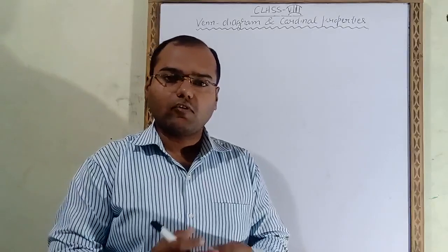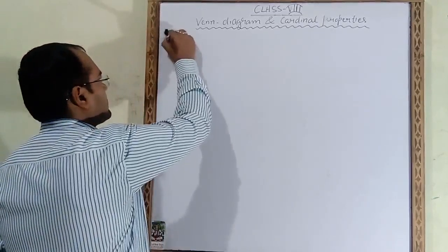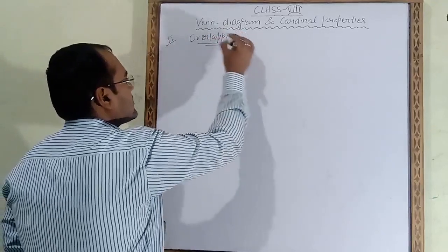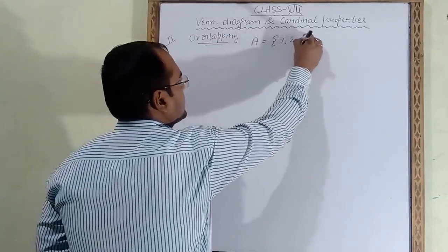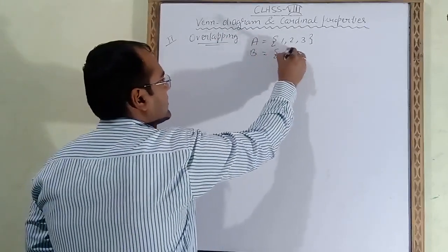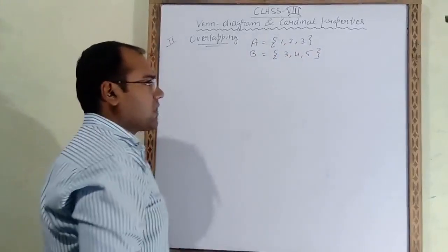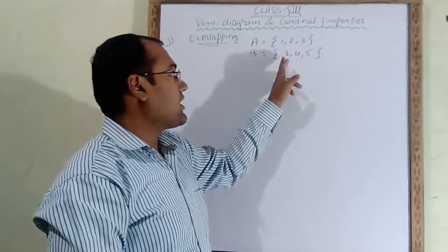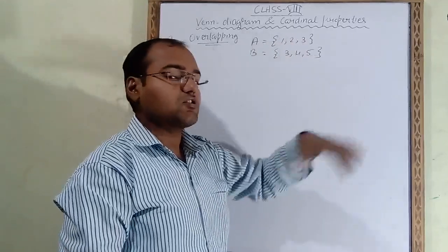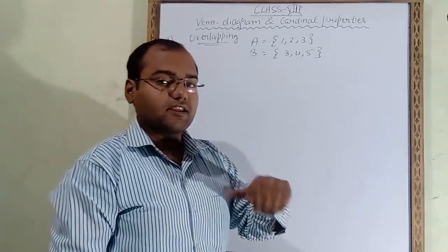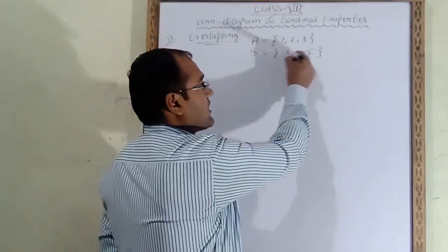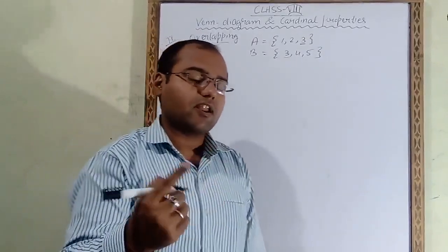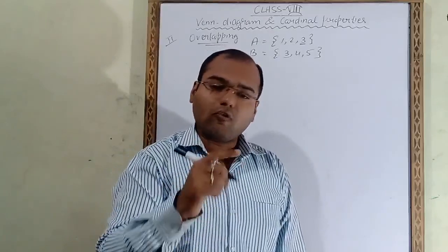The second case is overlapping. Suppose set A has elements 1, 2, 3 and set B has elements 3, 4, 5. Not all elements of A are in B, and not all of B are in A, so this is not a subset case. However, element 3 is common in both. If one or more elements are common, that case is overlapping.